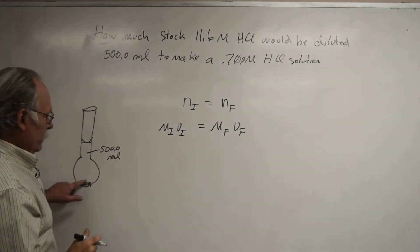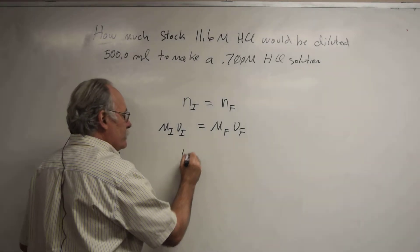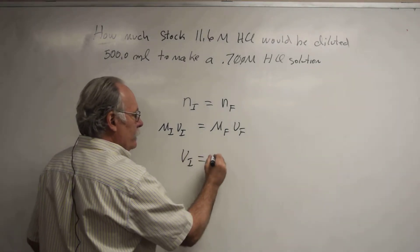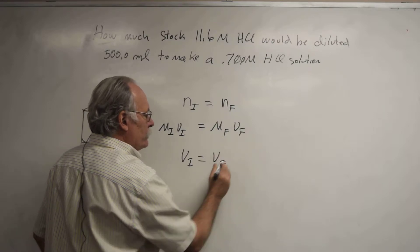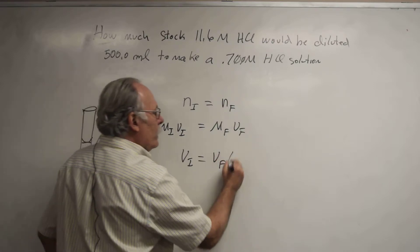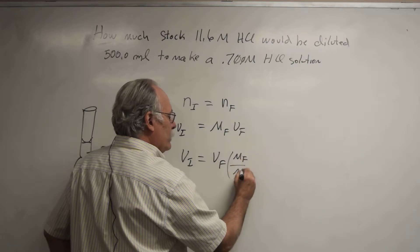So if I want to solve for the initial volume, I could write this as V initial equals V final times M final over M initial.